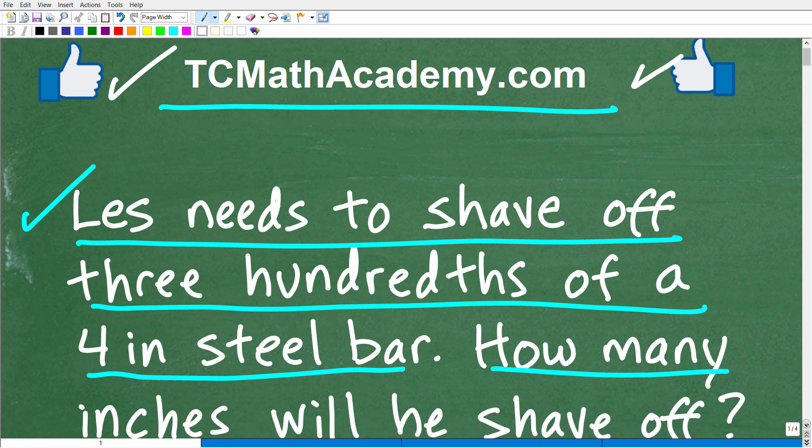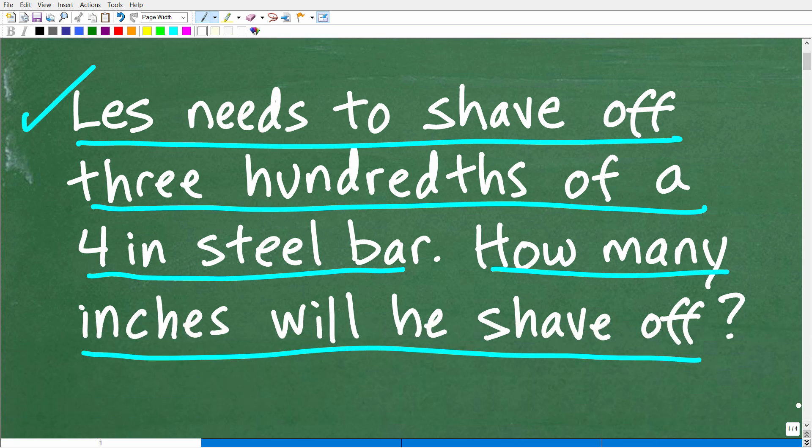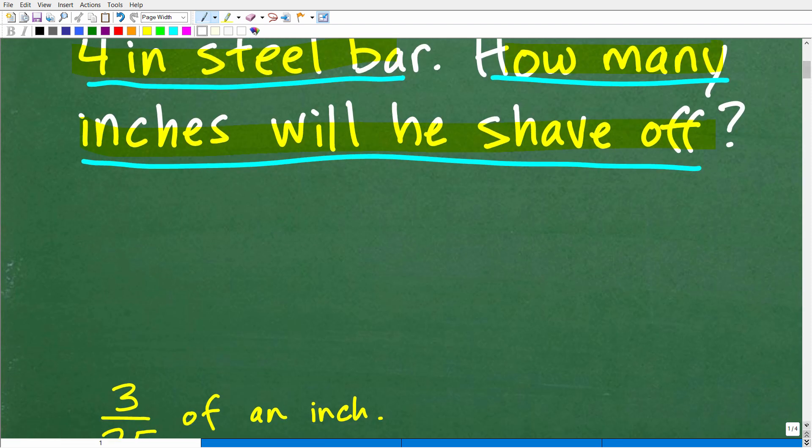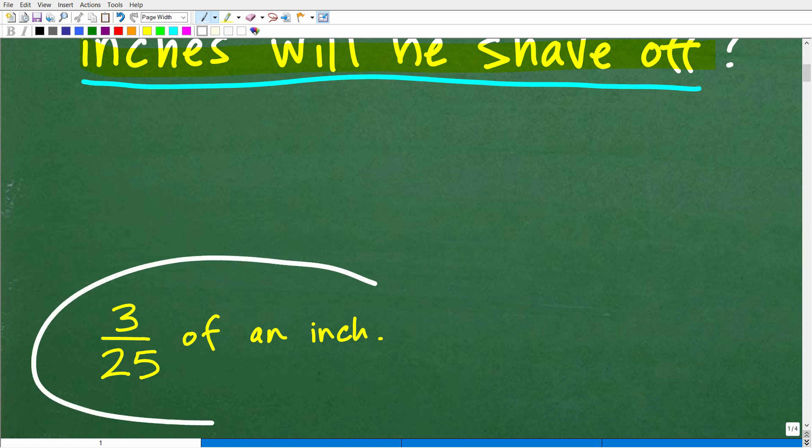Okay, so let's read the question one more time. Les needs to shave off three hundredths of a four inch steel bar. How many inches will he shave off? Let's take a look at the answer. The correct answer is three twenty-fifths of an inch.